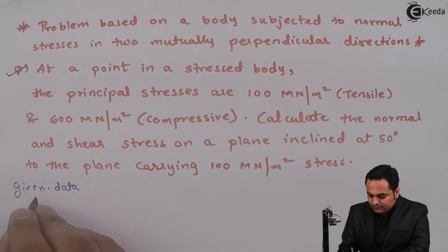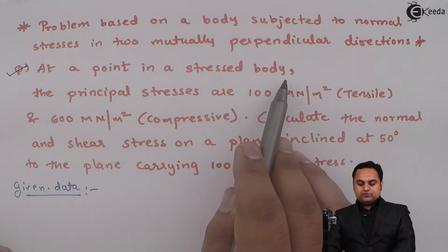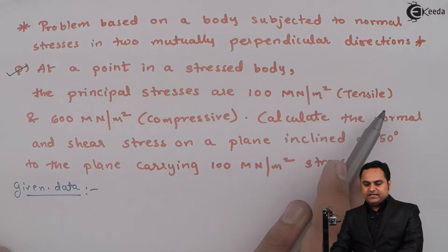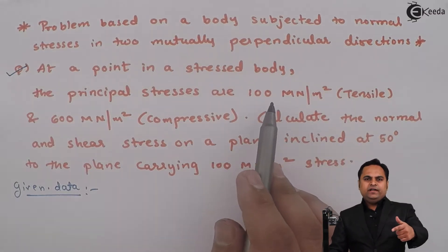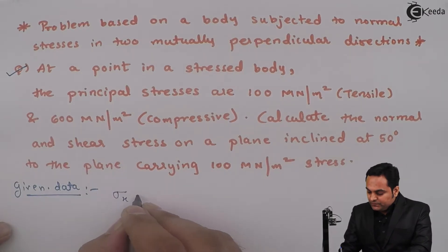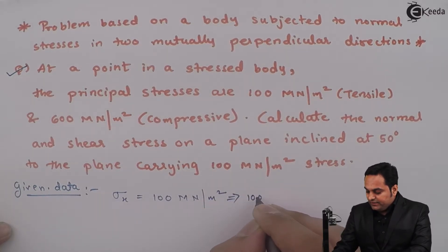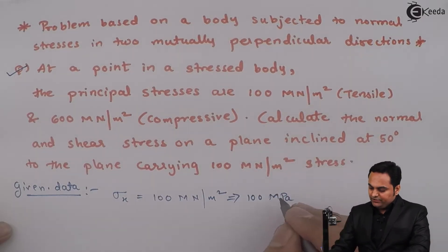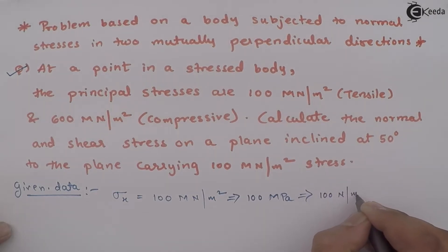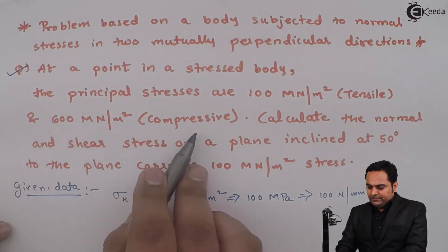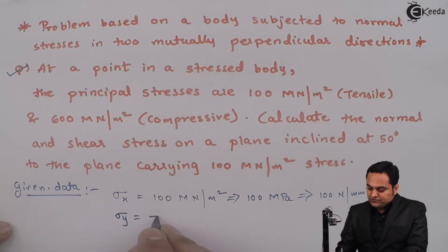It is given that at a point in a stressed body the principal stresses are 100 mega Newton per meter square, tensile. So I'll take it along the X direction, so Sigma X is 100 mega Newton per meter square, which is 100 mega Pascal or 100 Newton per mm square. Similarly, the next stress given is 600 mega Newton per meter square, compressive.